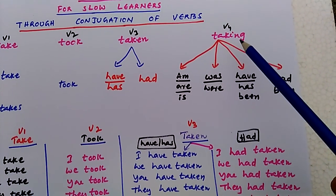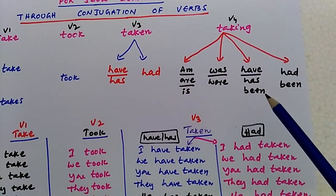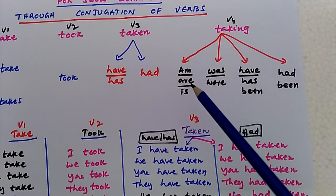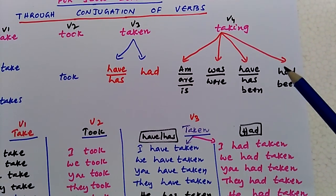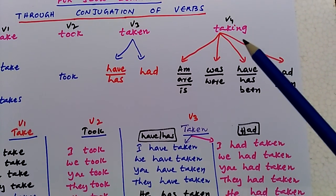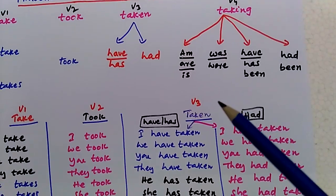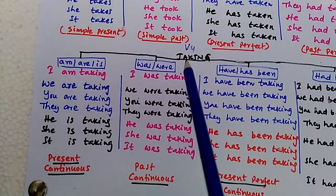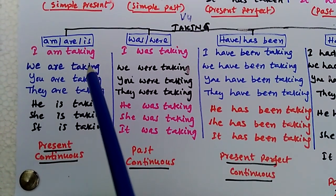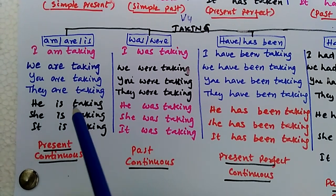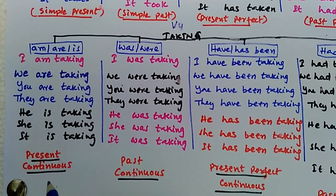Now verb four — 'taking'. For writing the tables with 'taking', we can add four types of phrases: am, are, is; or was, were; have or has been; or had been to verb four. By doing so we get four tables. By adding am, are, is, we get: I am taking, we are taking, you are taking, they are taking, he is taking, she is taking, it is taking. This table is called present continuous.